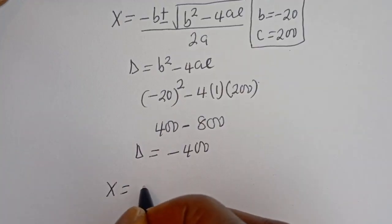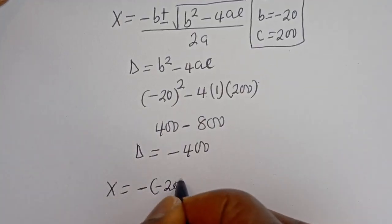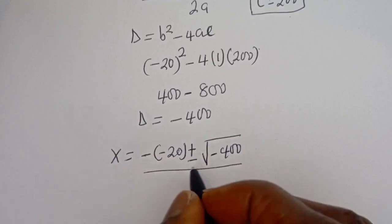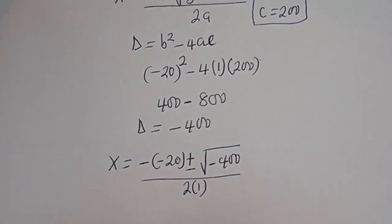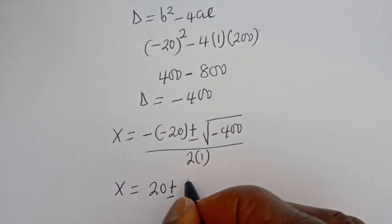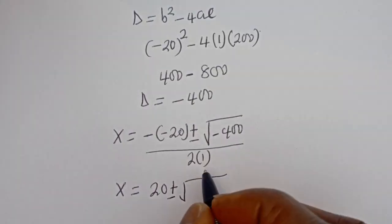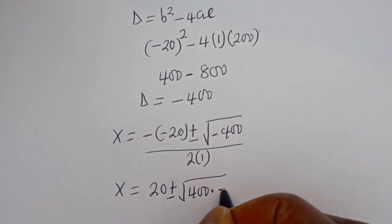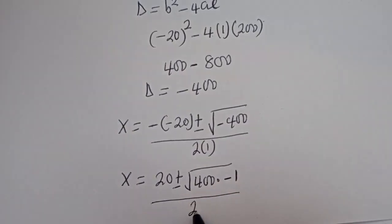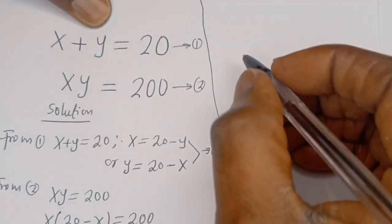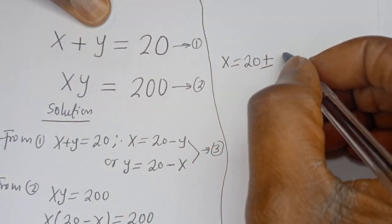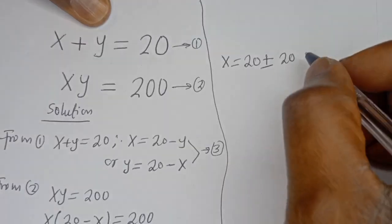Now let's plug in using the quadratic formula. x equals negative b, which is minus (minus 20), plus or minus the square root of minus 400, divided by 2 times 1. So x equals 20 plus or minus square root of minus 400. The square root of minus 400 can be written as square root of 400 multiplied by minus 1, which gives 20 times the square root of minus 1, that is 20i.